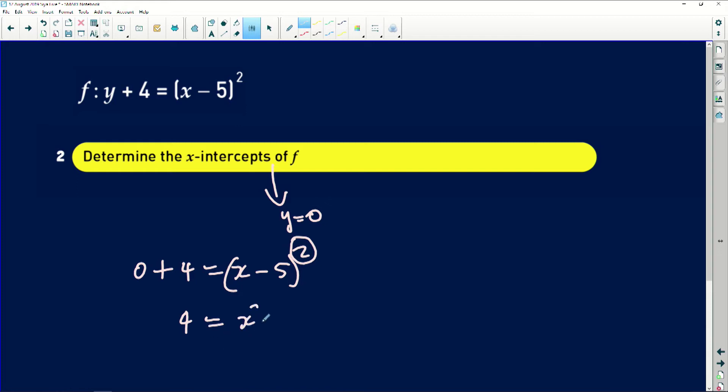So 4 will be equal to x squared minus 10x plus 25. And then this will be x squared minus 10x. I'm going to take the 4 to the other side by adding the additive inverse. So it will be minus 4 is equal to 0.